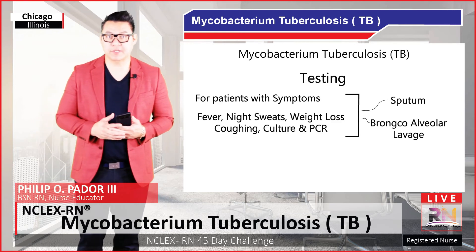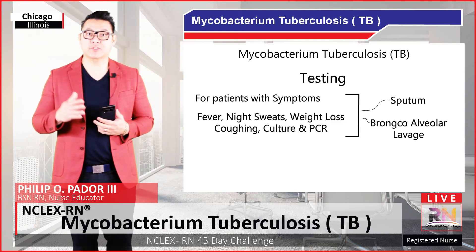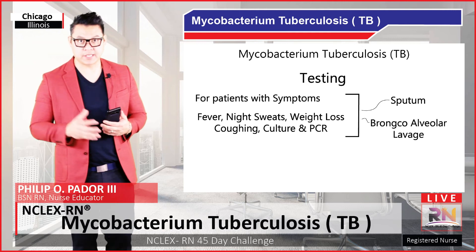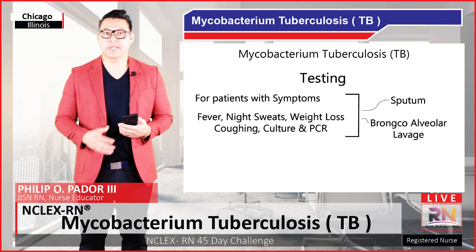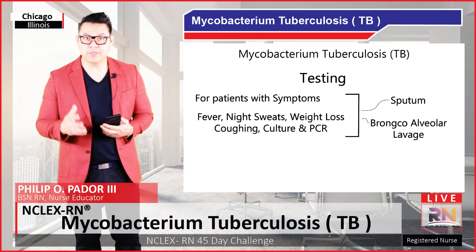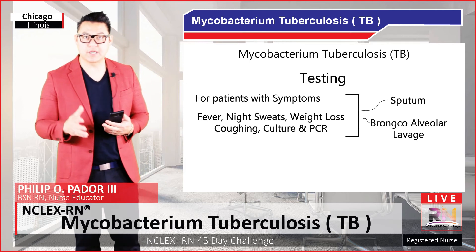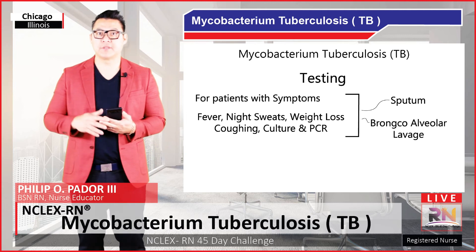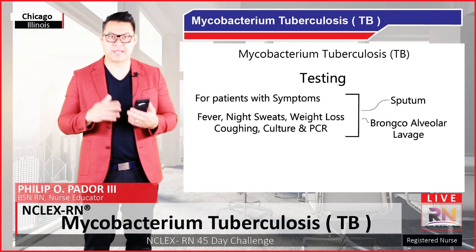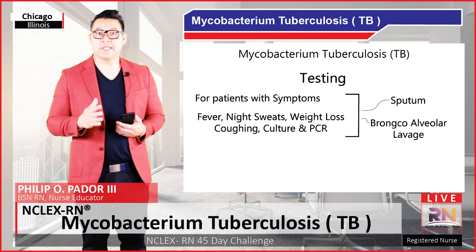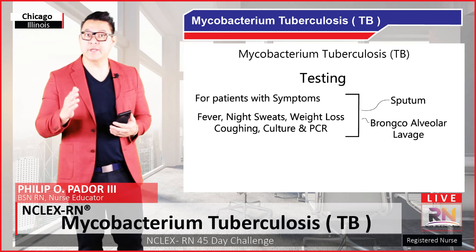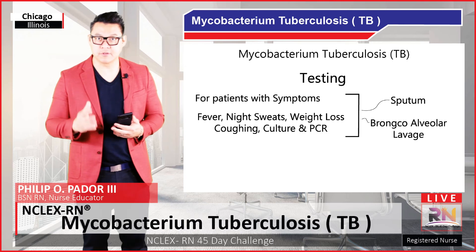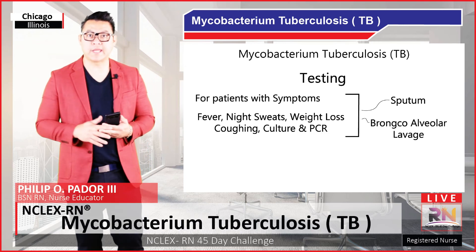In patients with symptoms like fever, night sweats, weight loss, and coughing up blood — or hemoptysis — it is important to collect samples from either the sputum or from bronchoalveolar lavage, where a bronchoscope is inserted through the mouth or nose into the lungs, fluid is squirted in, and then that fluid is collected. These samples are sent to the lab for staining, culture, and PCR to look for evidence of mycobacterium tuberculosis.